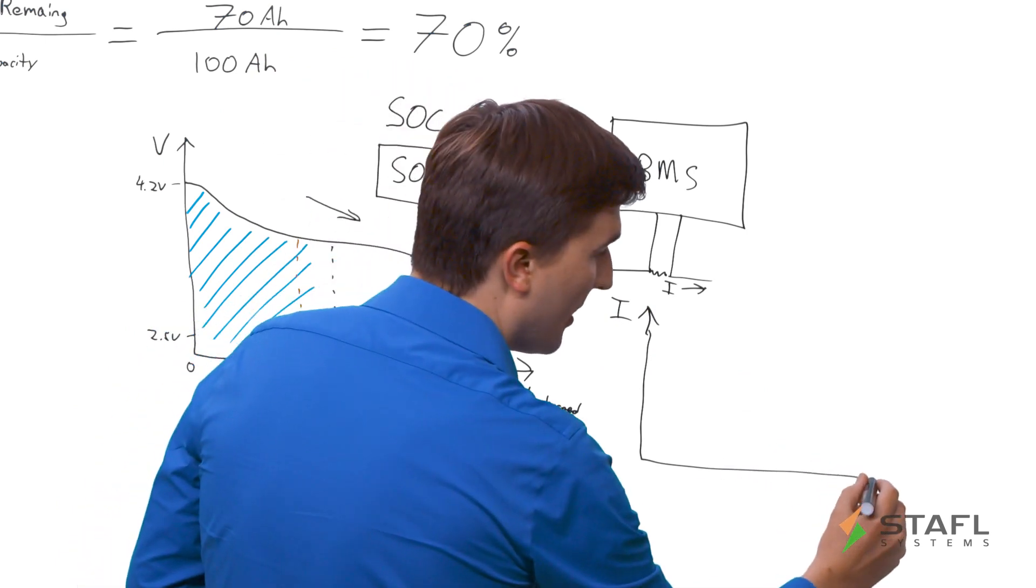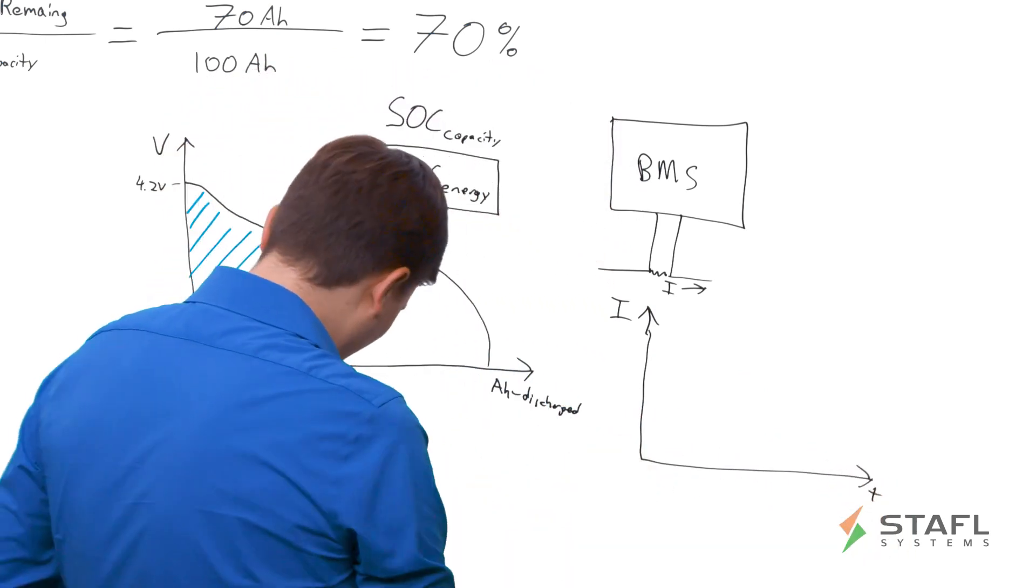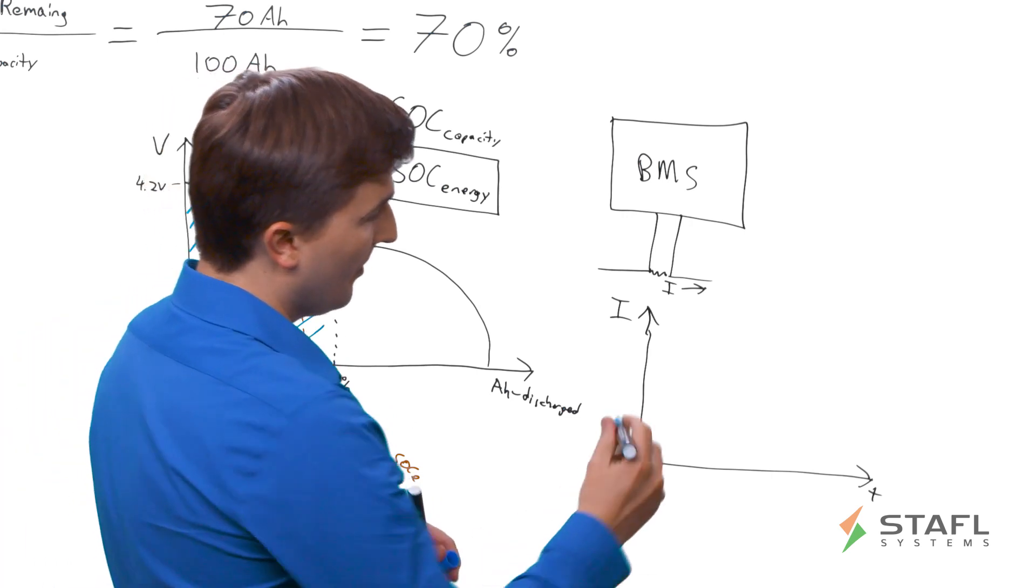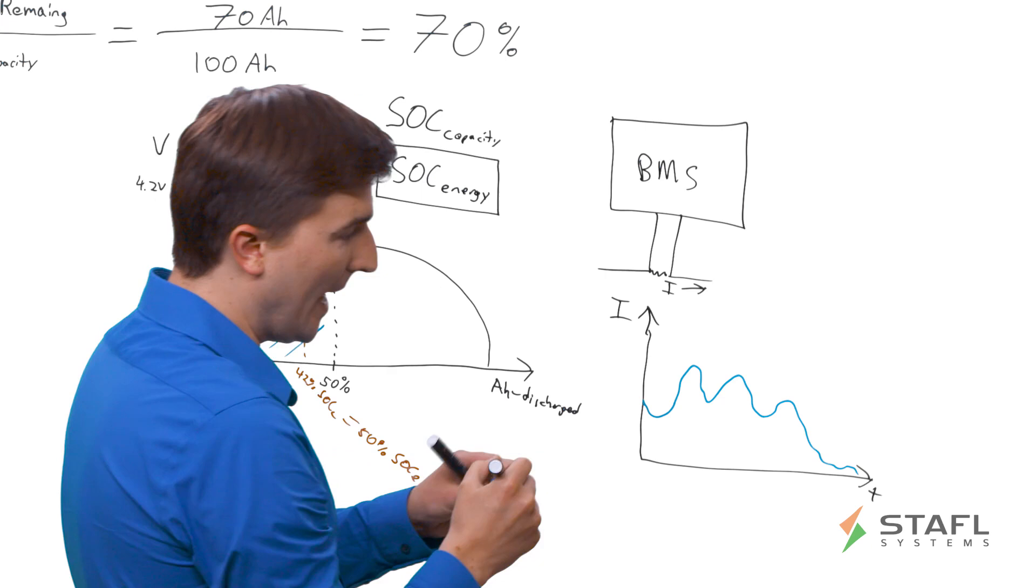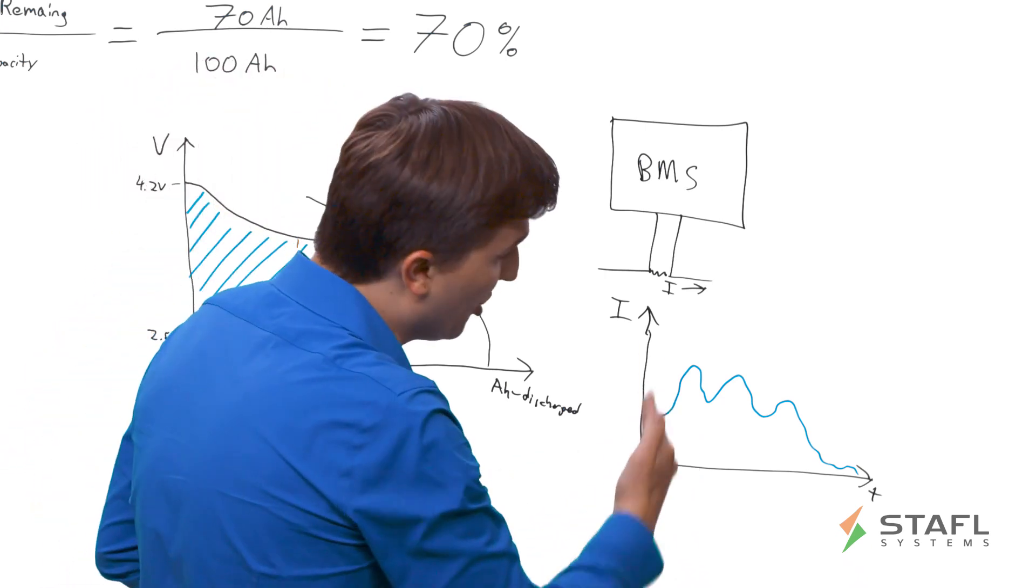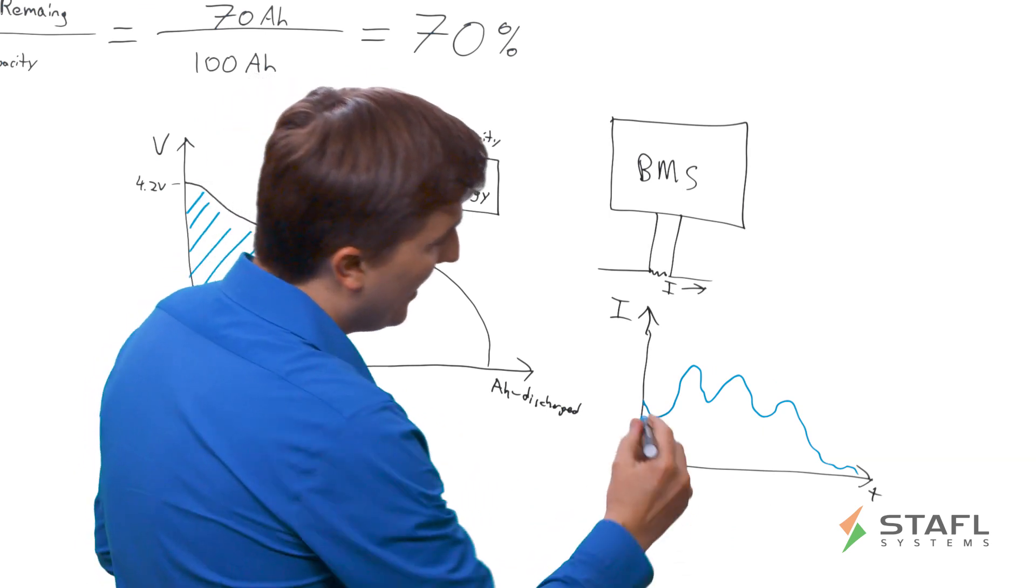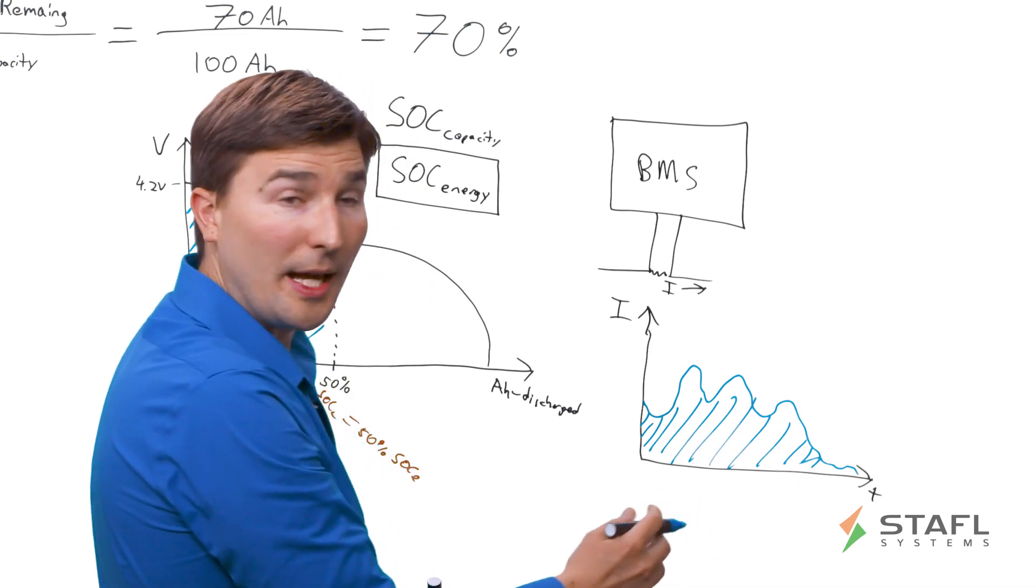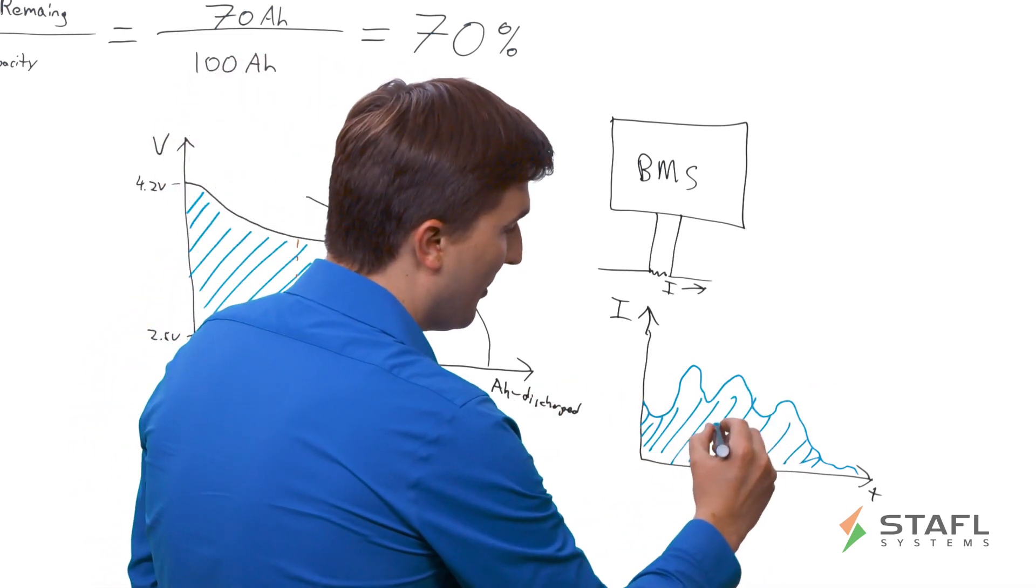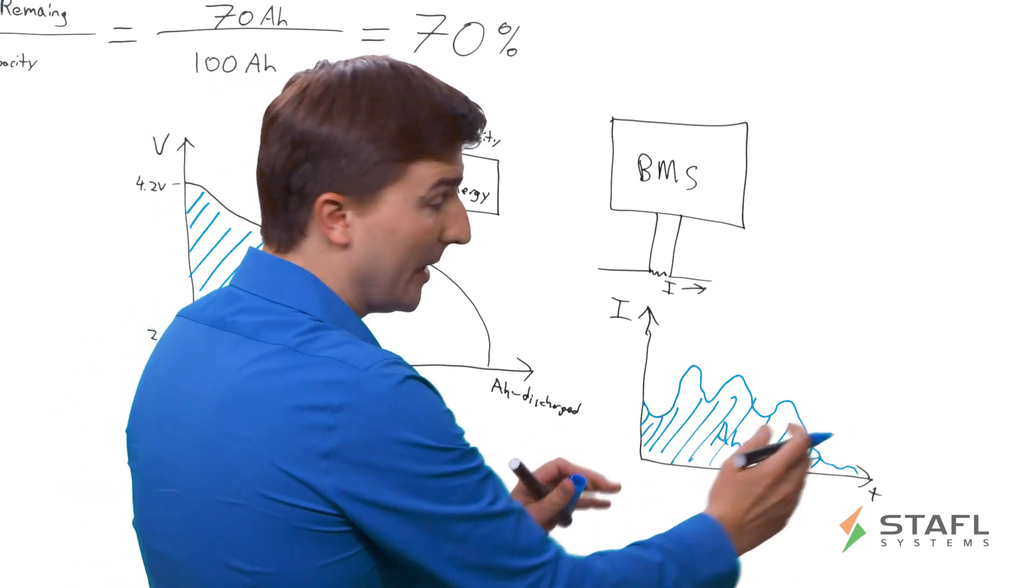So this is your current and this is time. Say that we have a curve that looks like this. That is how much current at any given time is coming out of the pack. The area under the curve corresponds to the actual capacity removed. So this is in units of amp hours. And this is what Coulomb counting does.